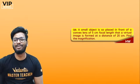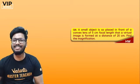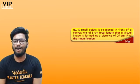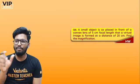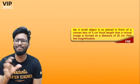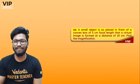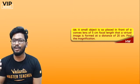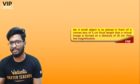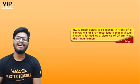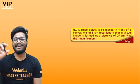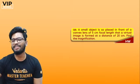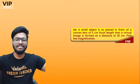This is your homework question for the day: a small object is placed in front of a convex lens of 5 cm focal length such that a virtual image is formed at a distance of 25 cm. Find the magnification. Let me know the answer in the comment section — let's see who gets it the fastest.